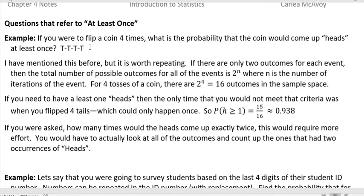I mentioned this before, and it's worth repeating. If there are two outcomes for each event, then the total possible number of outcomes for all the events is 2 to the nth power, where n is the number of iterations for the event. So for four tosses of a coin, it's 2 to the fourth power. It could be heads or tails. That's where we get two for our sample space. And then we have four times we're doing that. So 2 to the fourth power is 16 outcomes in that entire sample space for four tosses.